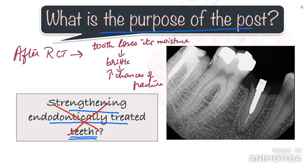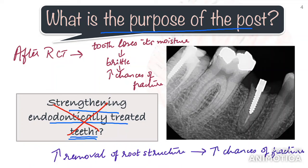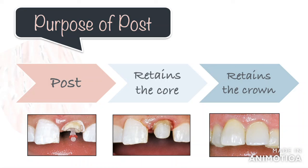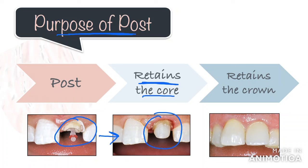But it is just the opposite. Today, we know that the preparation of post space actually weakens the root, increasing the potential to fracture. This is because of an obvious reason — we are removing more root structure. The more we remove, the more the tooth is vulnerable to fracture. So why place a post in the first place? It's definitely not strengthening the root. The purpose of the post is simple — it is only and only to retain the core.